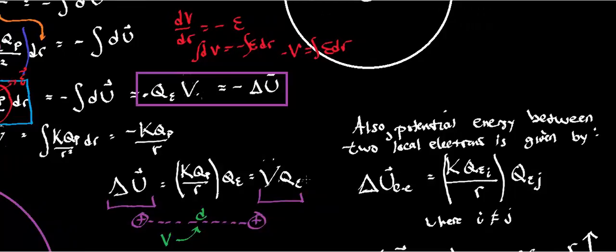If you multiply that voltage times the charge of, say, this one right here, if it's the voltage due to this one, multiply by this charge, you get the potential energy between the two charges.